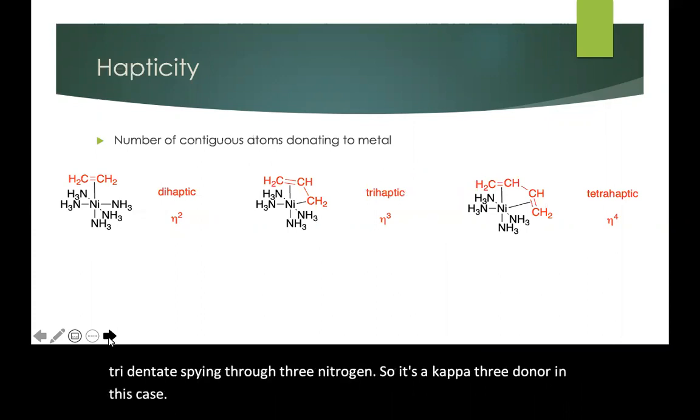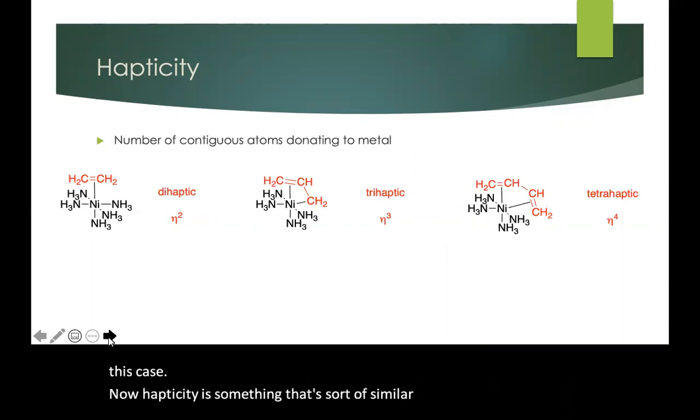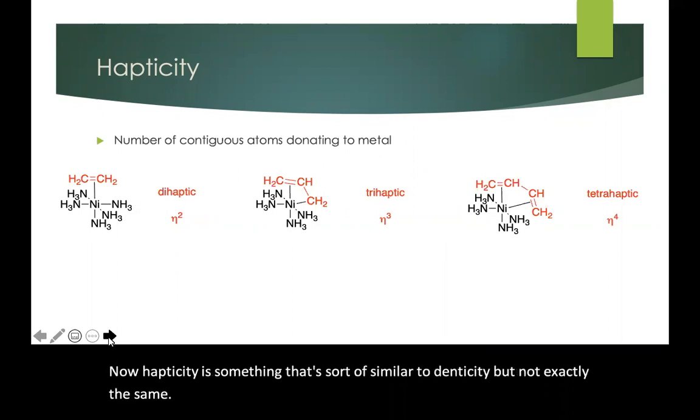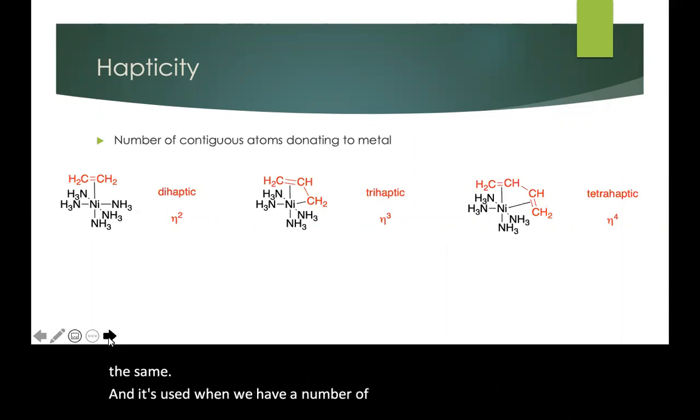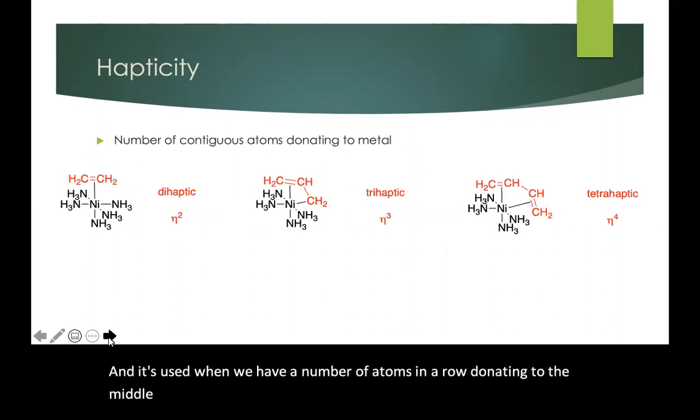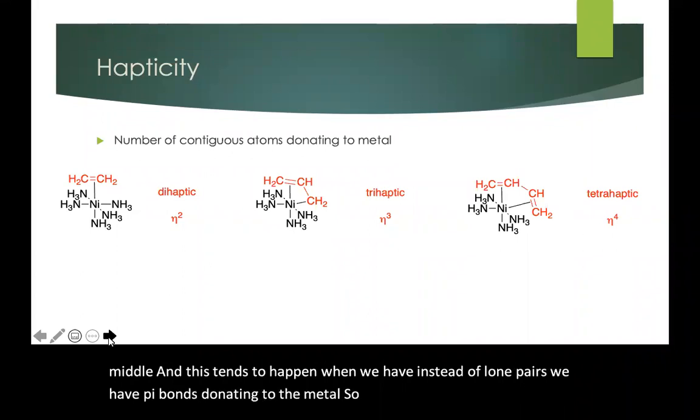Now hapticity is something that's sort of similar to denticity but not exactly the same, and it's used when we have a number of atoms in a row donating to the metal. This tends to happen when we have, instead of lone pairs, we have pi bonds donating to the metal.